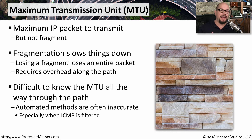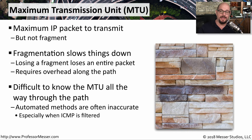Another problem with fragmentation is that sometimes you don't know it's actually happening. It's difficult to know what the actual maximum transmission unit size would be from one end of the network to the other. The process of determining the MTU between one device and another is commonly automated when the session is established. But if there is some type of filtering between the devices, especially with ICMP, you may not be able to automatically configure an MTU between devices, and it may be up to you to manually configure these MTU values.